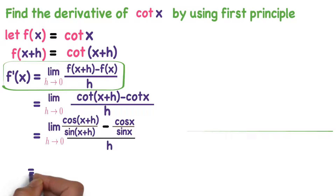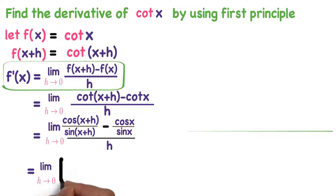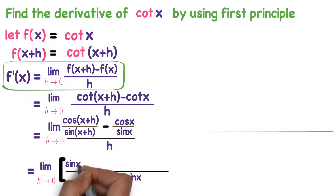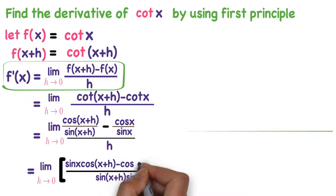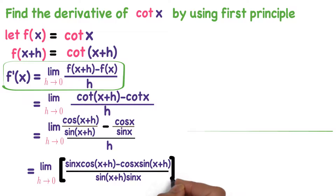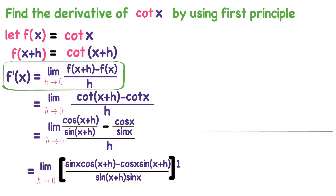If we continue this further, limit h tends to 0. Observe the numerator — the LCM is sin of x plus h into sin x. So the numerator becomes cos of x plus h into sin x minus cos x into sin of x plus h, that whole divided by h, which can be written as multiplied by 1 divided by h.